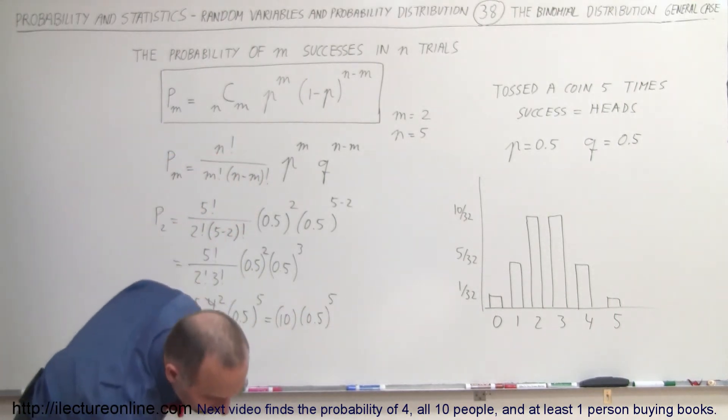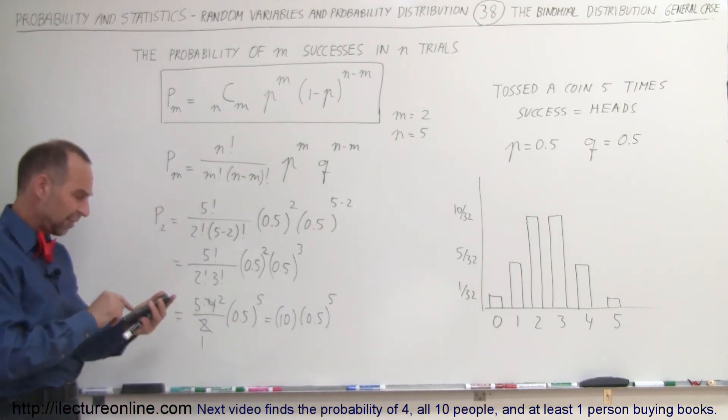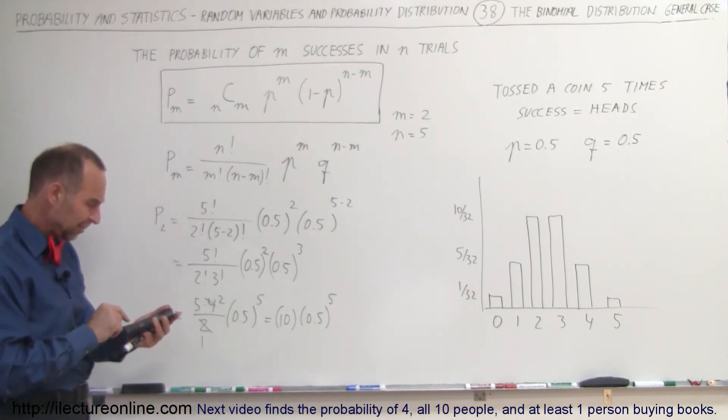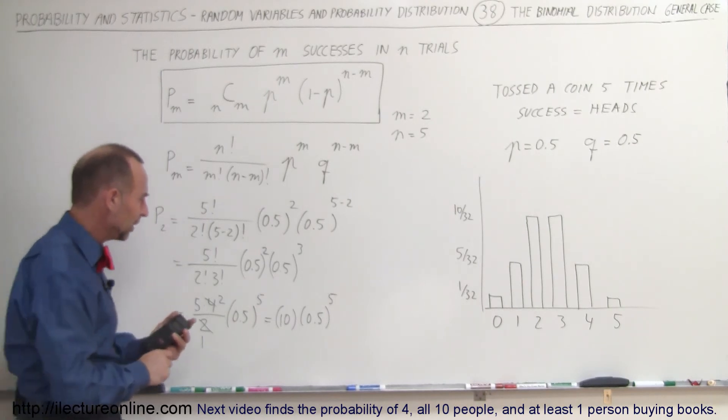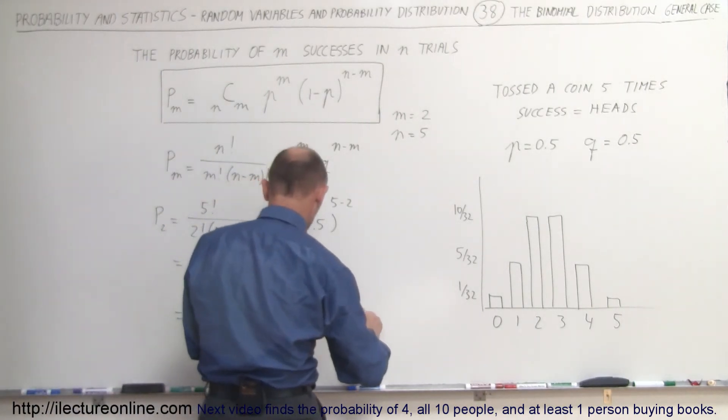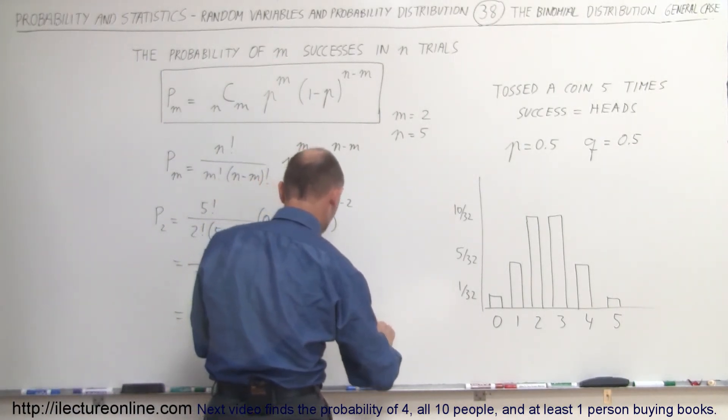Now we need the calculator. So 0.5 raised to the fifth power and then we multiply times 10 and we end up with this is equal to 0.3125.